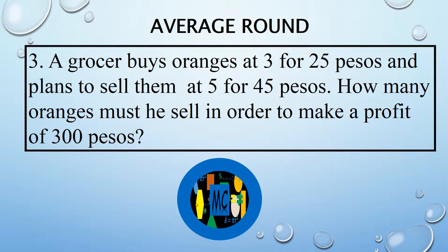A grocer buys oranges at 3 for 25 pesos, and plans to sell them at 5 for 45 pesos. How many oranges must he sell in order to make up 300 pesos?